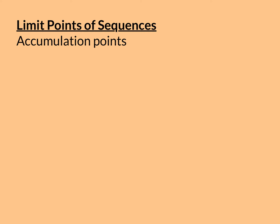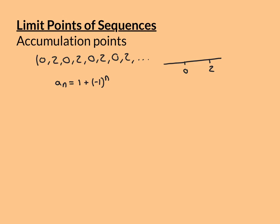Here is a really nice simple example. It's the sequence 0, 2, 0, 2, 0, 2, 0, 2. It continues like this forever, just alternating between 0 and 2.